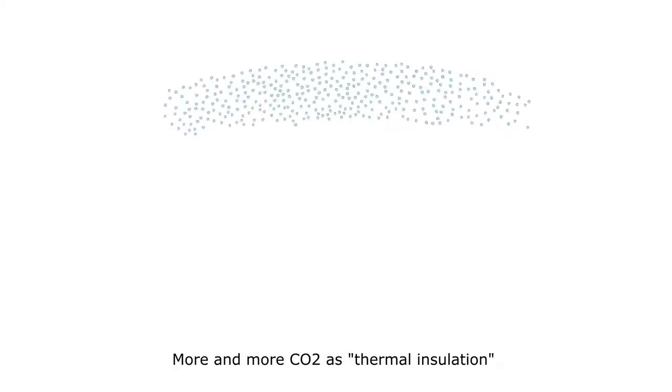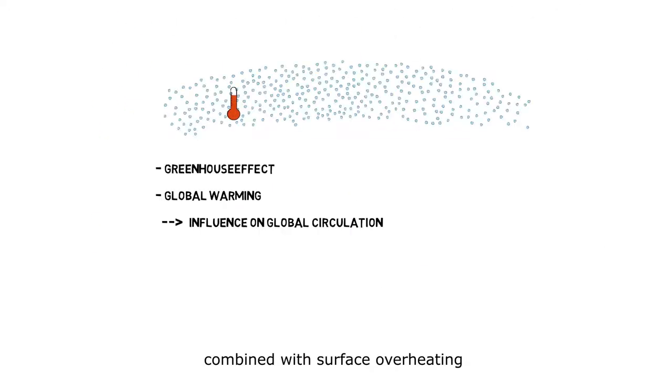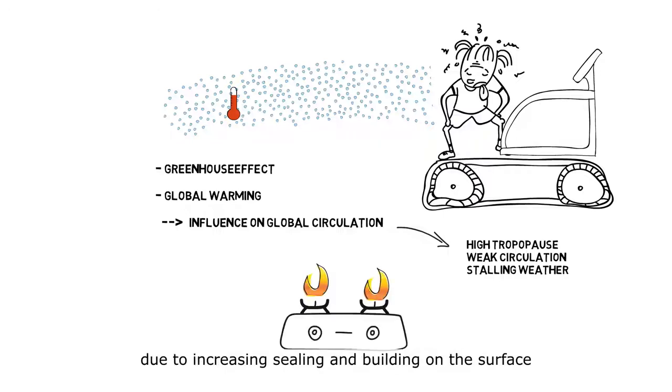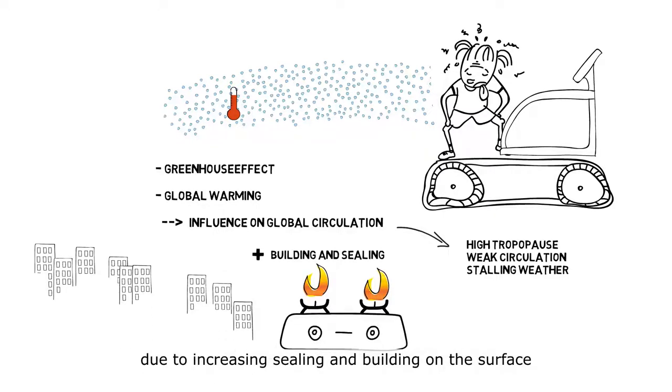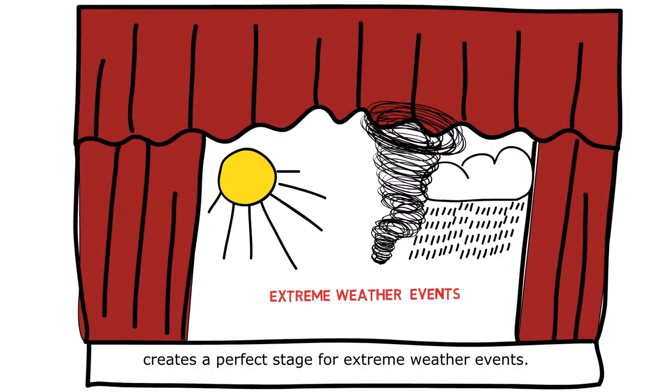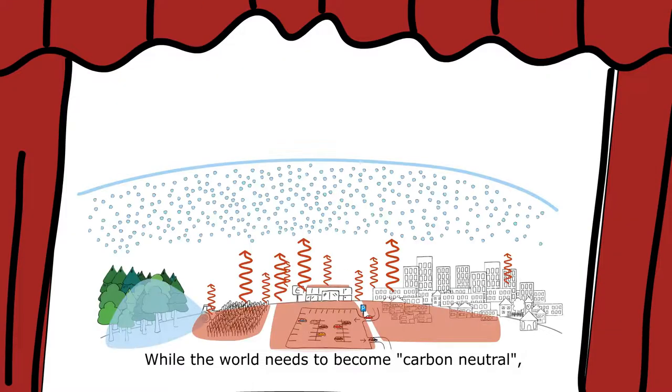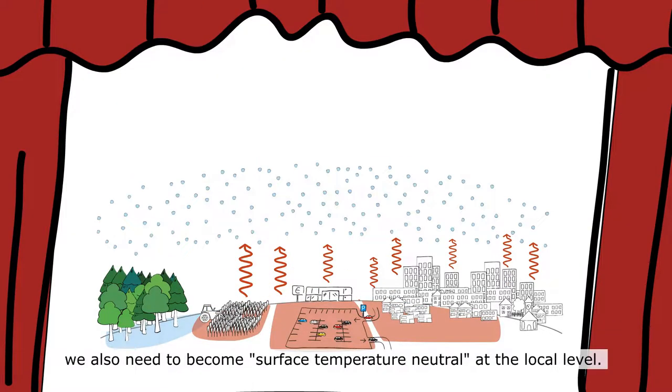More and more CO2 as thermal insulation, combined with surface overheating due to increasing sealing and building on the surface, creates a perfect stage for extreme weather events. While the world needs to become carbon neutral, we also need to become surface temperature neutral at the local level.